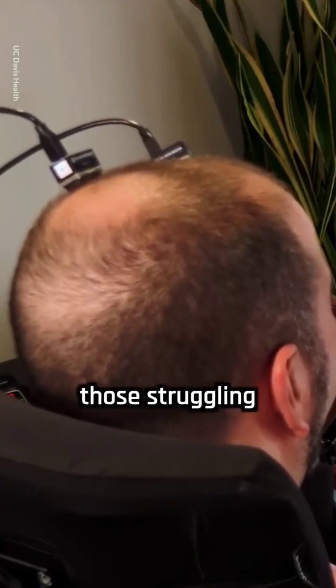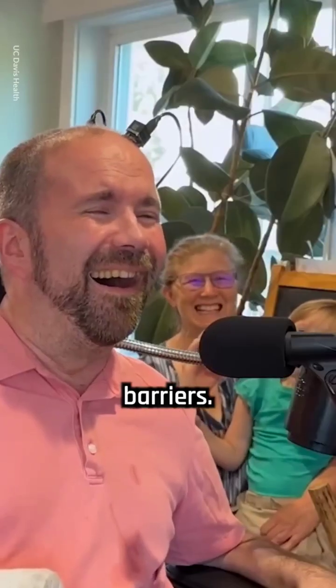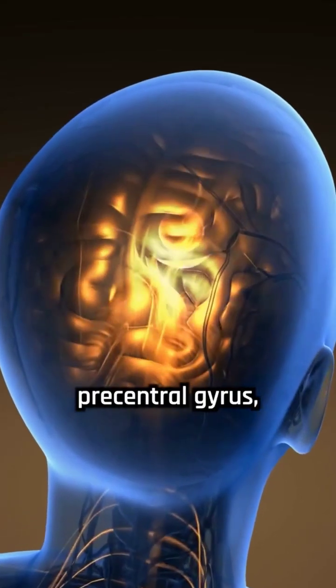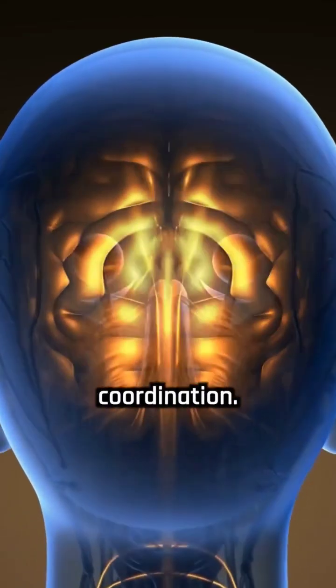The device consists of four microelectrode arrays placed in the left precentral gyrus, a brain region crucial for speech coordination.